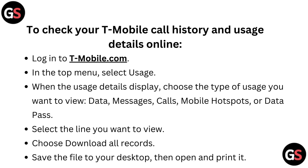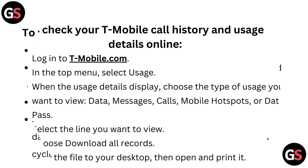Select the line you want to view. Choose download all records, save the file to your desktop, then open and print it.